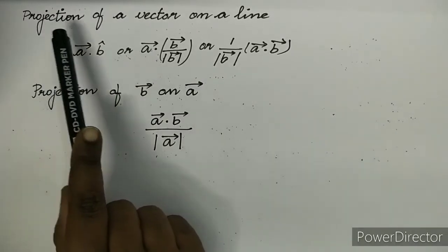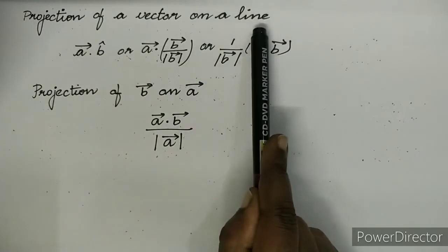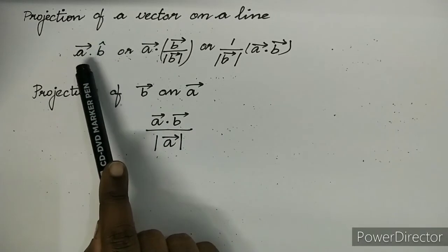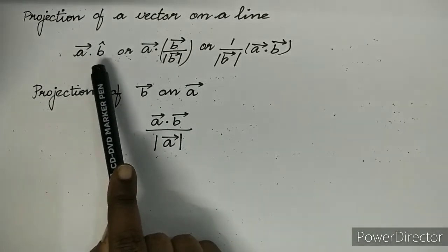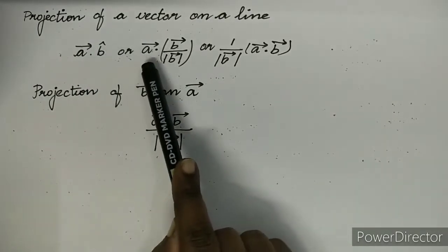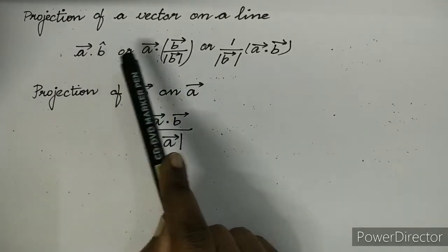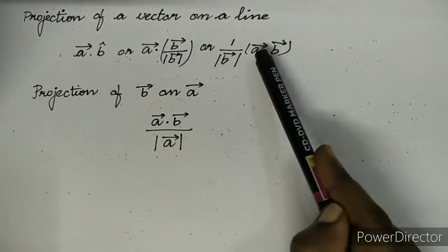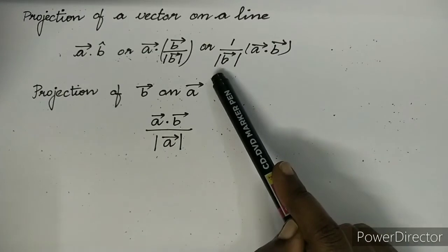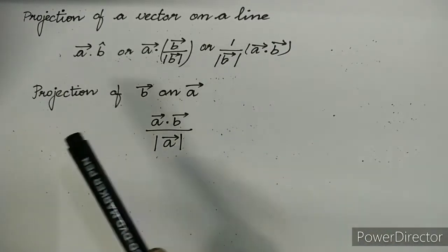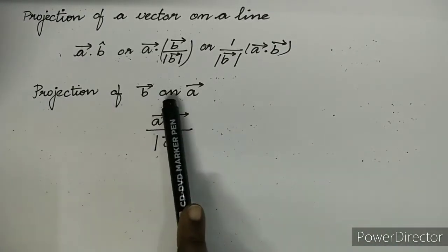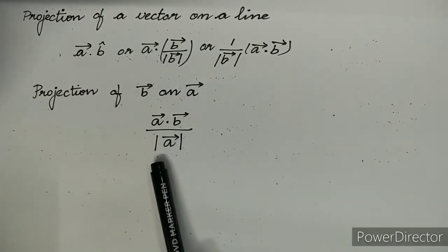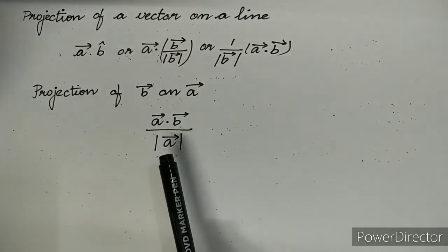Next is projection of A vector on a line. Projection of A on B is given by A·B̂, which equals A·B / |B|. Similarly, projection of B on A is A·B / |A|.